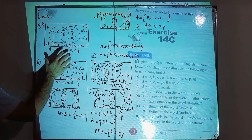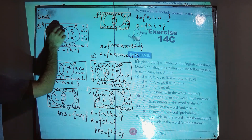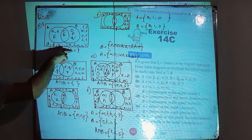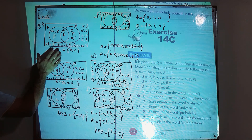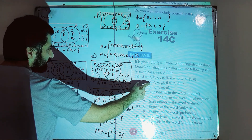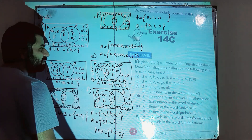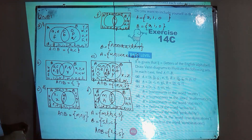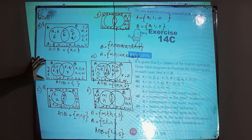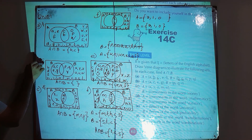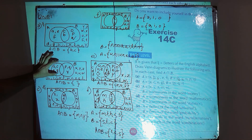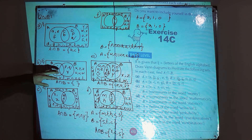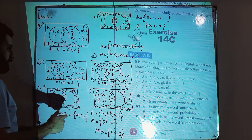A intersection B is the part common to both A and B, and the elements in that overlapping part are b and c. So A intersection B = {b, c}. For part b, we have set A with elements a, c, e, g, and set B with elements p, q, r. Draw a rectangle for the universal set, then draw circles for A and B with an overlapping region.